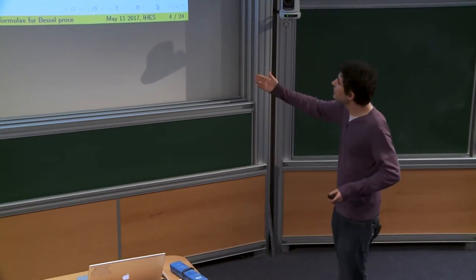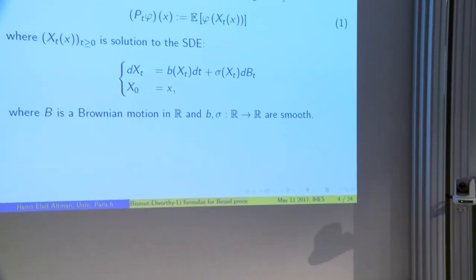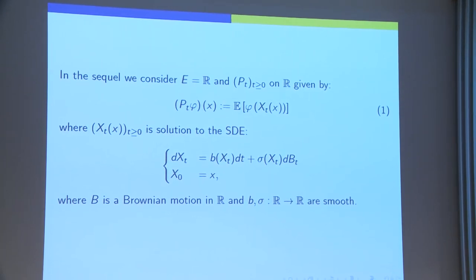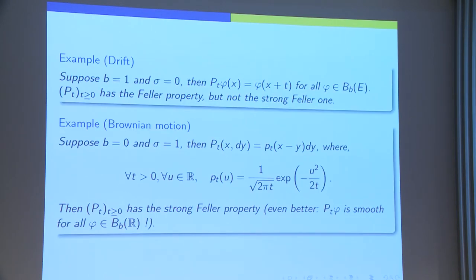In the sequel, I will focus on the case where E is given by the real line, and then the semi-group is given by expectation of φ of X_T of X, where X_T of X is the solution of some SDE with drift given by B and diffusion coefficient given by σ, which I suppose to be smooth functions on ℝ. The initial condition is given by X.